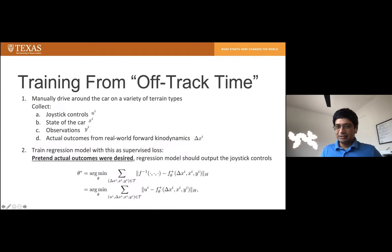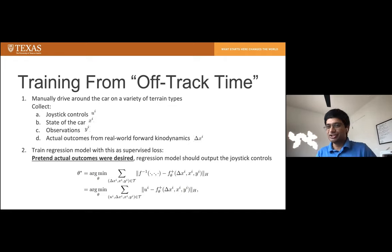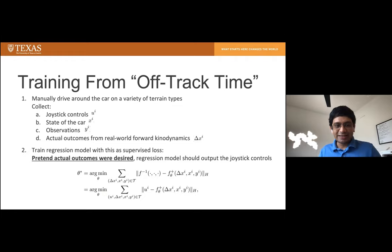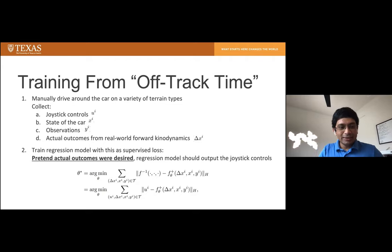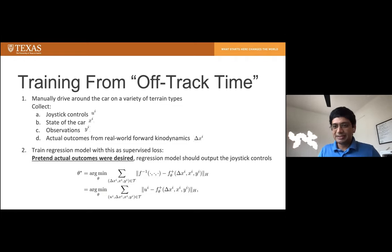To learn this model, we have a human manually drive the car around on different types of terrain — not on a track. We collect joystick controls, the states of the car, the observations, and the actual outcome from the real-world kinodynamics. We don't know the function, but we observe what actually happens. We then train a regression model with a supervised loss, pretending the actual outcomes were what we were seeking, so the model learns to output the joystick controls that produced those outcomes.